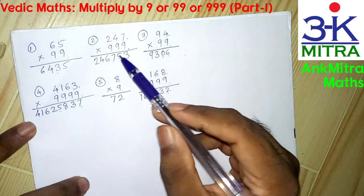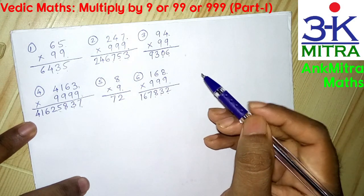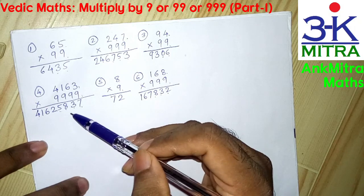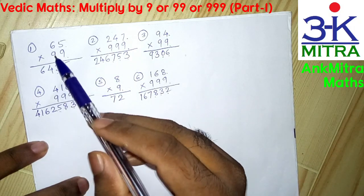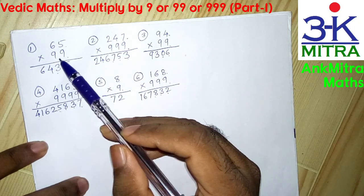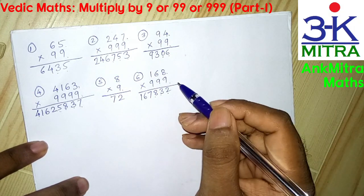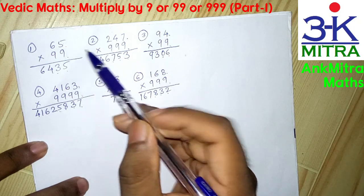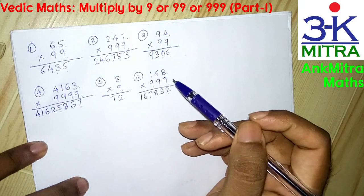I hope this procedure is very clear to everyone. With a little bit of practice, such multiplications can be done in just two or three seconds. Even with larger numbers, the time required is still much less compared to the traditional multiplication method. I hope you will use this trick whenever you need to multiply by 9, 99, 999, and so on. I will show you part two in the next video, where we have more nines than digits in the multiplicand.